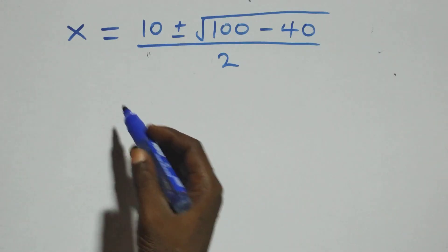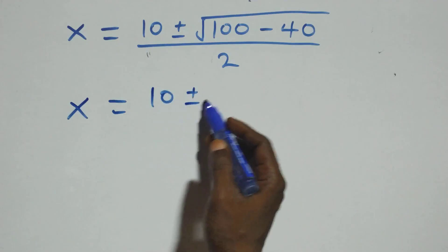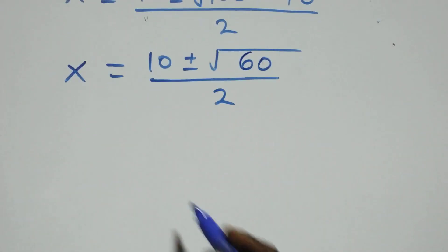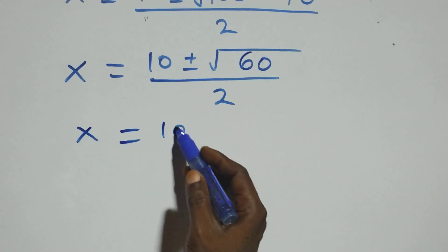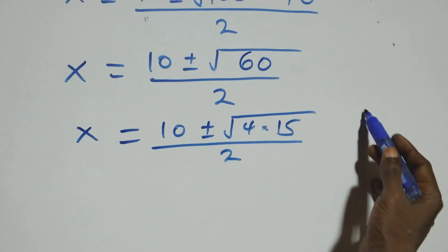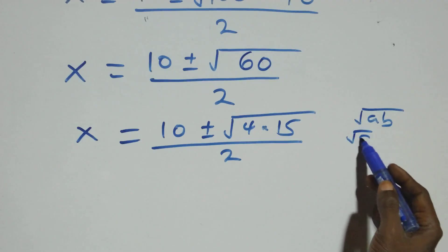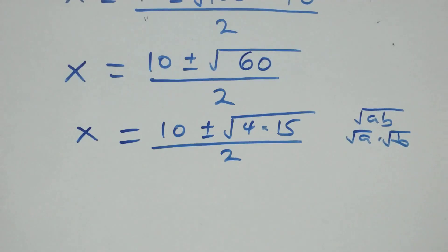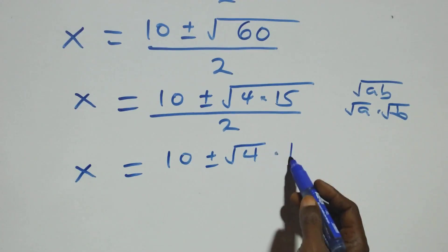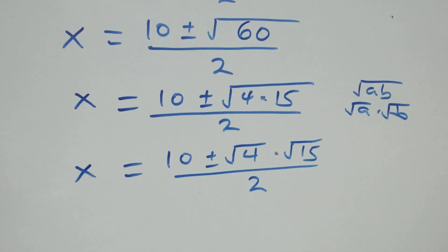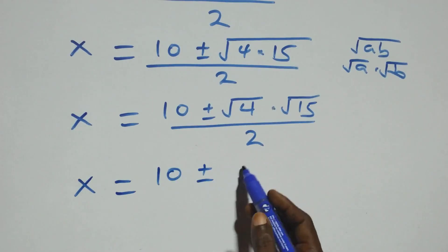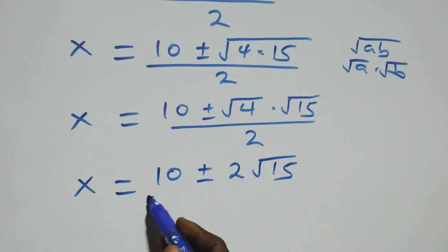So we have x equals 10 plus or minus the square root of 100 minus 40, which is 60, over 2. This is the same as x equals 10 plus or minus the square root of 4 times 15 over 2. Using the rule that the root of a times b equals root a times root b, this becomes x equals 10 plus or minus root 4 times root 15 over 2, which is x equals 10 plus or minus 2 root 15 over 2.